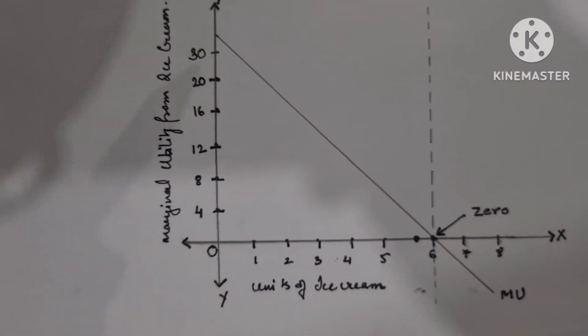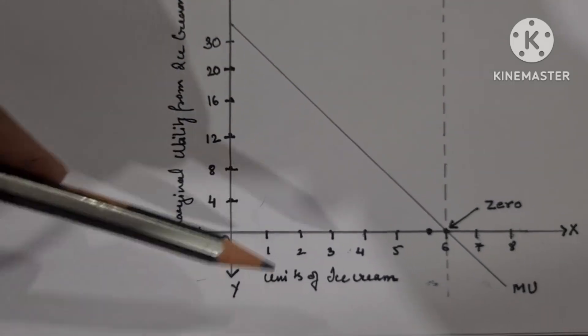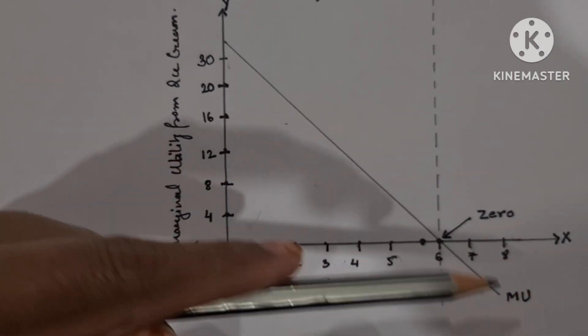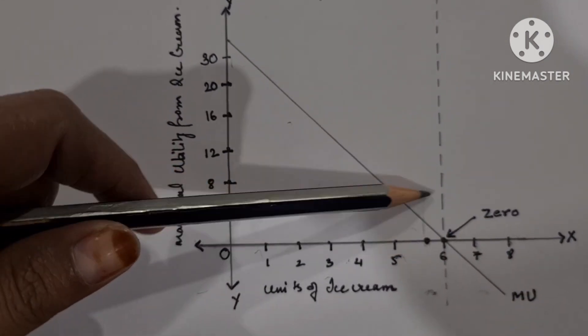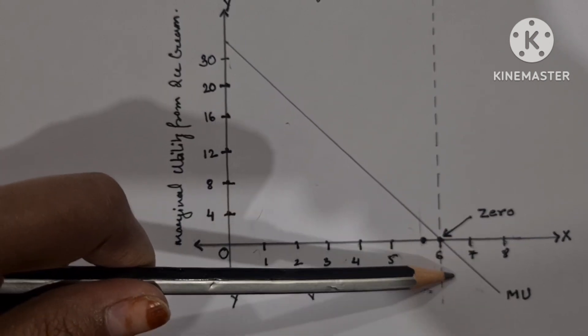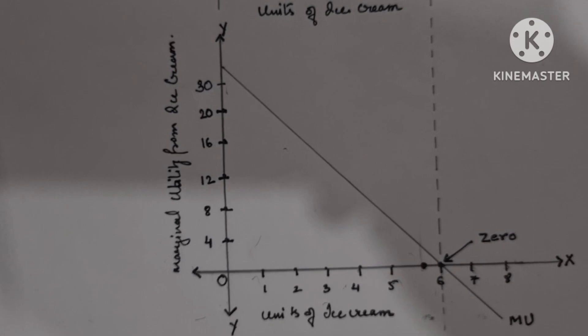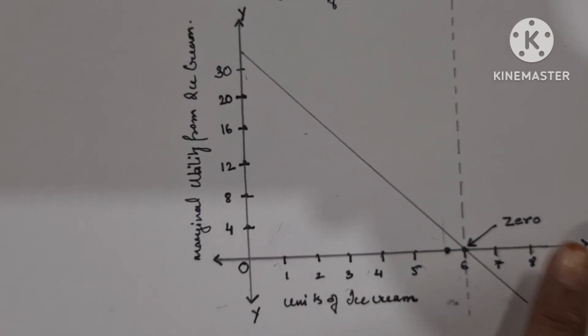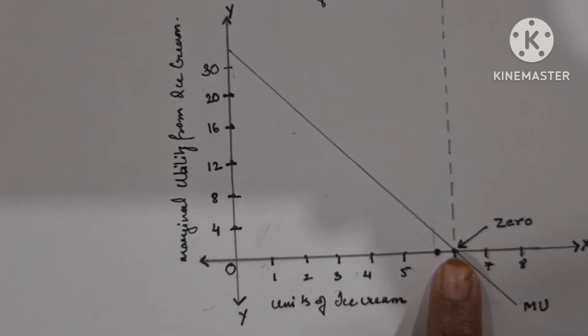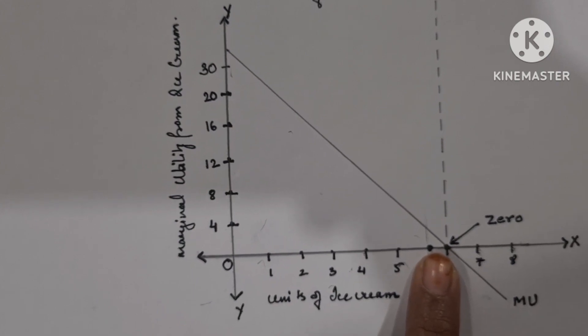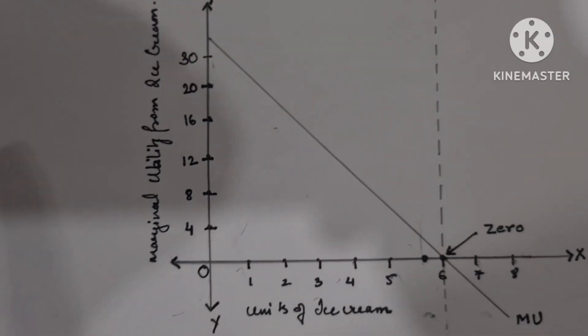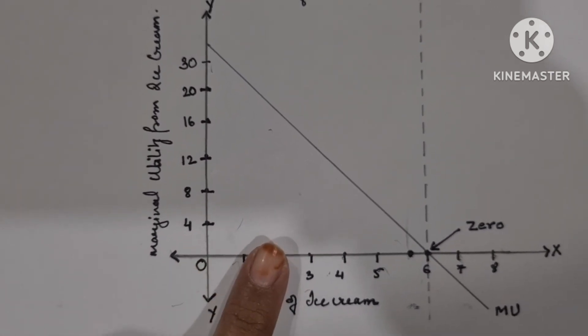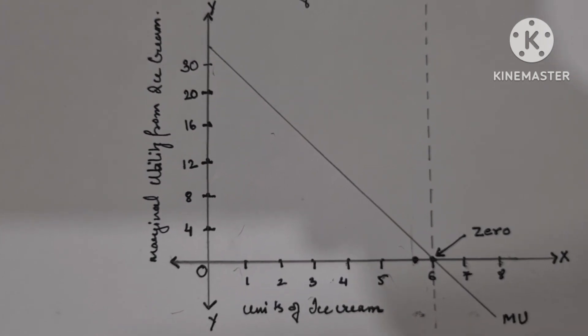Here you can draw this in your copy and further write. As we consume more and more units of any product, the marginal utility goes on decreasing, become zero. And if we further consume more products, the marginal utility will become negative and which will lead to disutility. And this point, the zero is called the point of satiety. That means full satisfaction. So, such a decrease in satisfaction with consumption of successive units occurs due to the law of diminishing marginal utility.